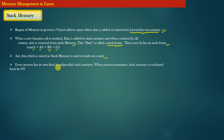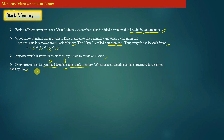Every process has its own fixed, configurable stack memory. The maximum amount of stack memory available for a given process is fixed — it neither grows nor shrinks. It is configurable, meaning you can change operating system parameters to configure the maximum amount of stack memory on the system. This configured value will be the maximum stack size for every process that runs on your machine. When the process terminates, the stack memory is reclaimed by the operating system.